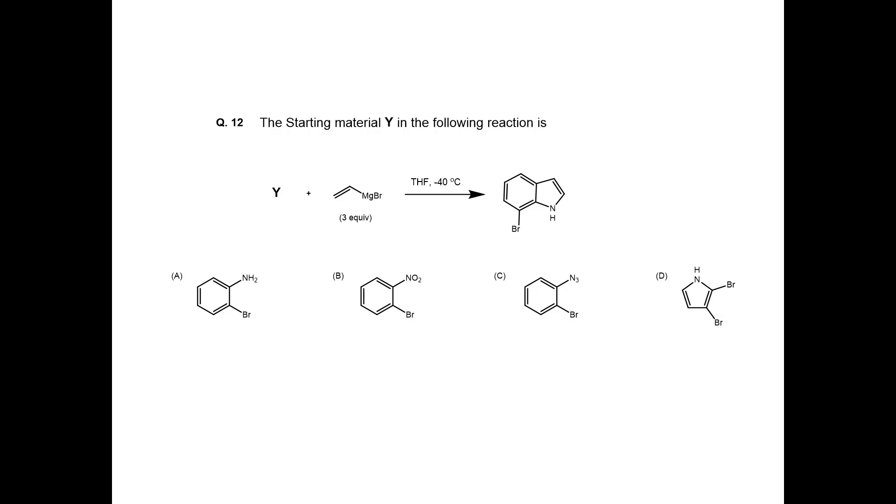Hello guys. Today I will discuss one question from Gate Chemistry 2022, question number 12. The starting material Y in the following reaction is: Y plus 3 equivalent of Vinylmagnesium Bromide in solvent THF at low temperature giving 7-bromo indole.